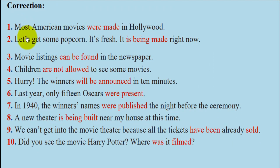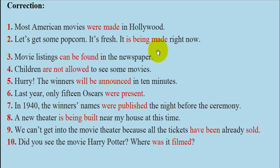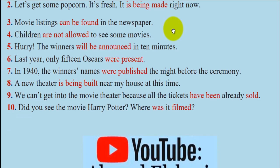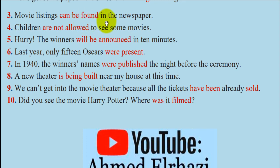Number 1: Most American movies were made in Hollywood — 'were made.' Number 2: 'It is being made right now' — present continuous passive. Number 3: 'The movie listings can be found in the newspaper' — with modal verbs, use modal + be + past participle.